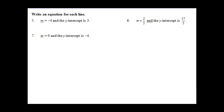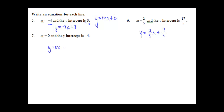Next examples: writing the equation of a line. Remember, for slope-intercept form we just need the slope and the y-intercept. If we have a slope of negative 4 and a y-intercept of 3, we write y equals negative 4x plus 3. If slope is 2/5 and y-intercept is 17/5, we write y equals 2/5 x plus 17/5. For a slope of 0, we have a flat horizontal line — we can write y equals 0x minus 4, or simply y equals negative 4.